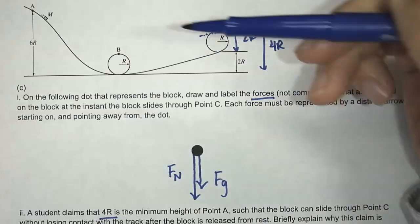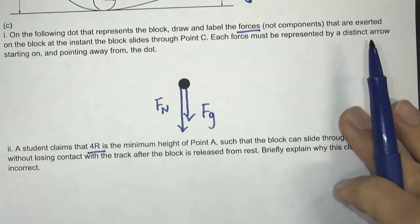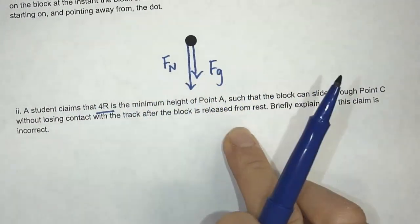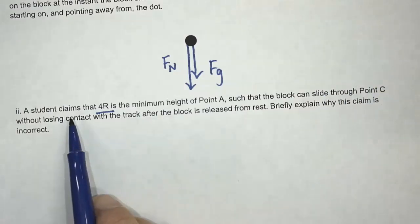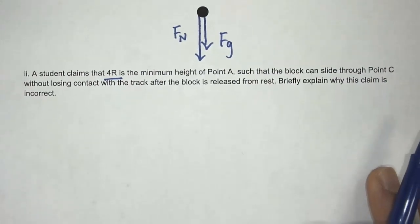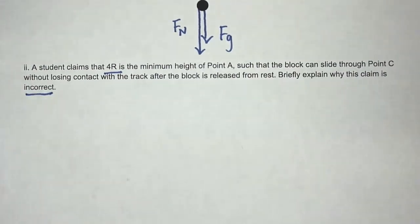So it's saying that if we started at 4R, if we had a block that started at 4R right there, such that the block can slide through points without losing contact with the track after the block is released from rest. That's what this student claims. Briefly explain why this claim is incorrect. So they already told you that it's incorrect, so now you have to think about why is it incorrect.